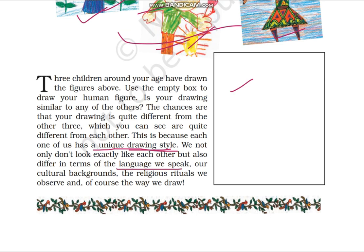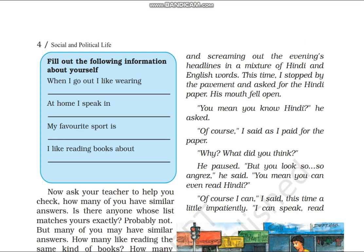And if we talk about other languages — we all have different languages. When you talk about a common language you can speak Hindi or English, but when you are at home, you can speak your native language, your regional language. So you can speak different languages based on your cultural and religious background. So here an activity is given and you can do this activity with some of your friends. You have to answer these questions like: when I go out, I like wearing — what do you like wearing when you go out? You may like wearing something different. And again: at home I speak in — what language do you speak with your family? My favorite sport is, and I like reading books. So you can answer these questions with your friends, and after answering, check if your answers are the same as your friends'. By comparing this, you can see in what ways you and your friends are similar, and in what ways you are different.